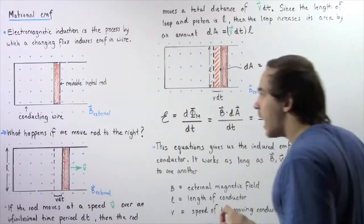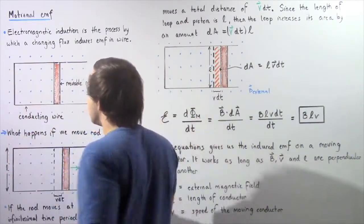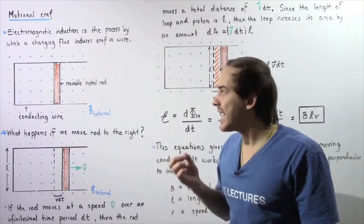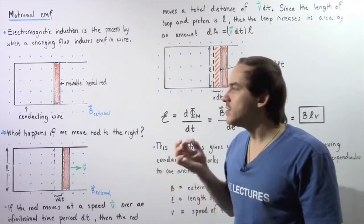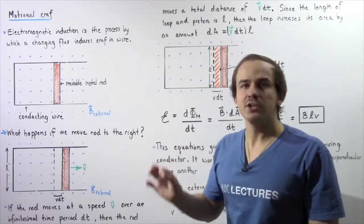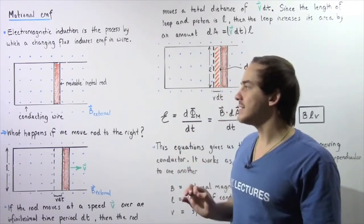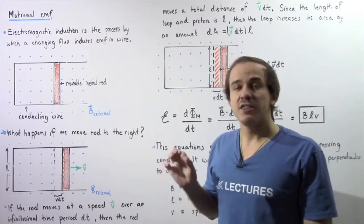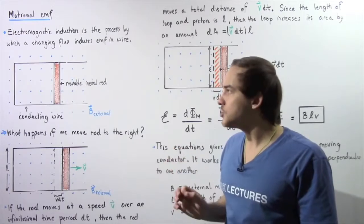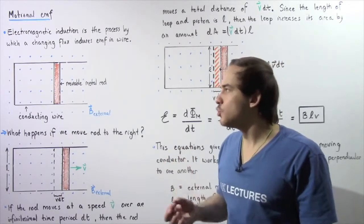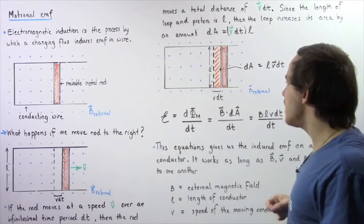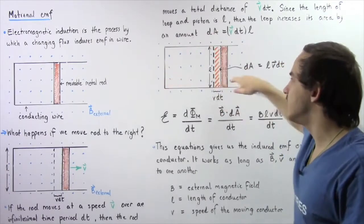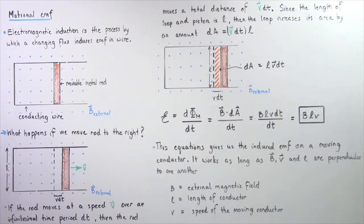Because this initial loop of conducting wire experiences a change in area as a result of our moving metal rod, that means there is a change in magnetic flux that is taking place. Because we have a change in magnetic flux, that implies by Faraday's law of induction there will be an induced EMF inside our conducting wire and an induced electric current will flow through this conducting wire. Electrons will begin to move.